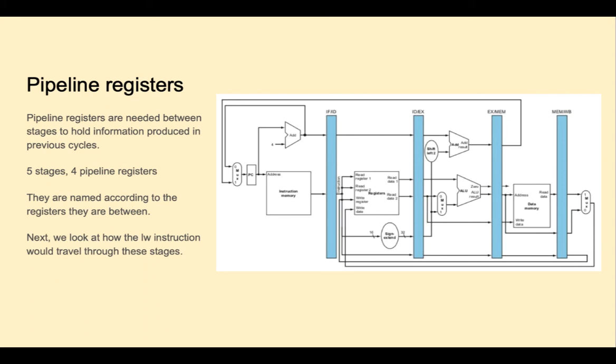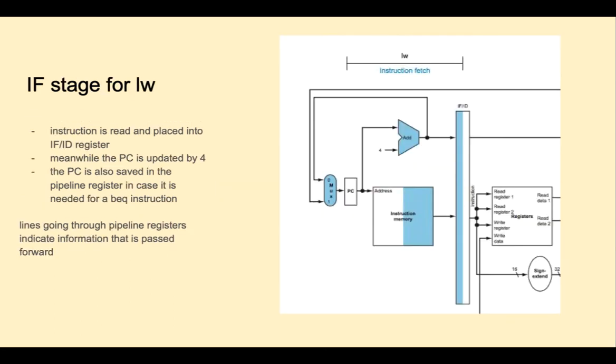Next we look at how the load word instruction would travel through these stages. The load word is fetched from instruction memory, so we see the right half of instruction memory being shaded, and it's written out to the pipeline register. So we see shading on the left for the pipeline register. Meanwhile, we can go ahead and update the PC by four. The PC will also be saved to the pipeline register. We might need it later in case the next instruction is a branch. Any lines you see going through the pipeline registers indicate information that's passed forward.